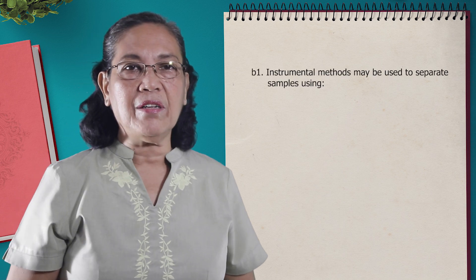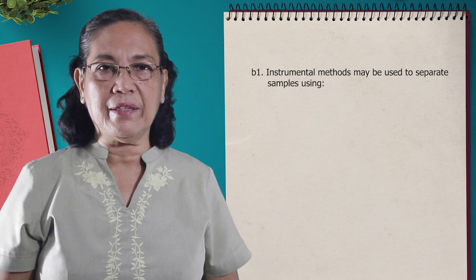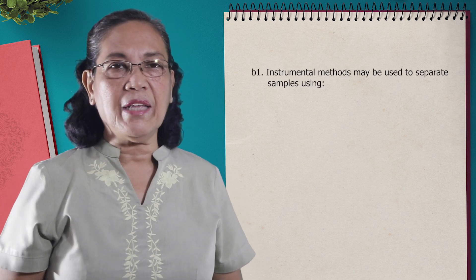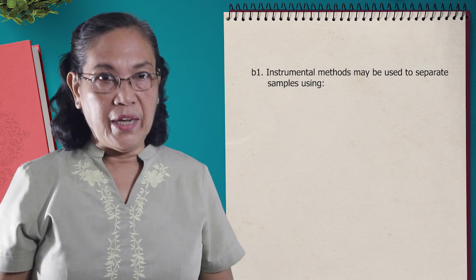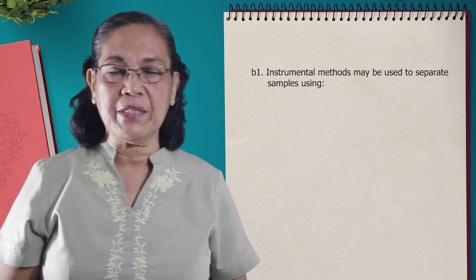The second procedure to be followed in chemical analysis is what we call the instrumental method. In the instrumental method, here is where we are going to use instruments or equipment to analyze a substance.